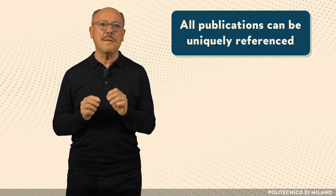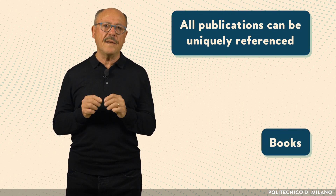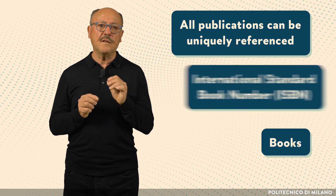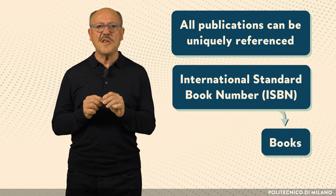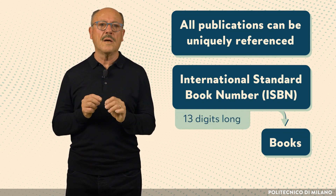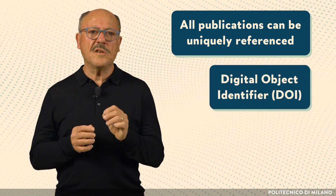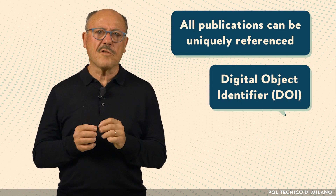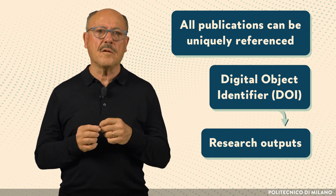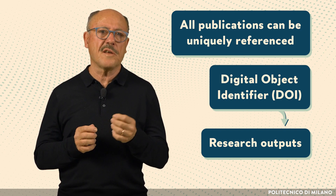According to international standards, all publications can be uniquely referenced. Books are uniquely identified by their International Standard Book Number. The ISBN is 13 digits long and is assigned to each edition of a book. A Digital Object Identifier is mainly used for research outputs such as journal articles, research reports and datasets, and even other types of information such as videos.